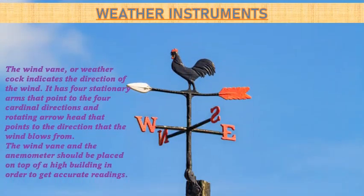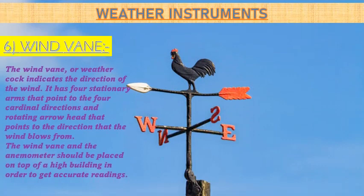Now let's know about a very common instrument — the wind vane. The wind vane indicates the direction of the wind. It has four stationary arms pointing to the four cardinal directions, and a rotating arrowhead that points to the direction the wind blows from. The wind vane and anemometer should be placed on top of a high building to get accurate readings.